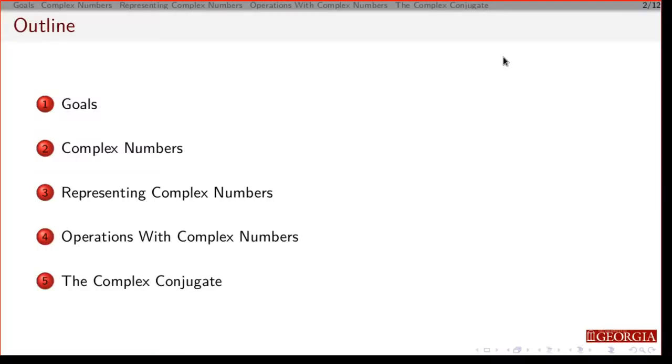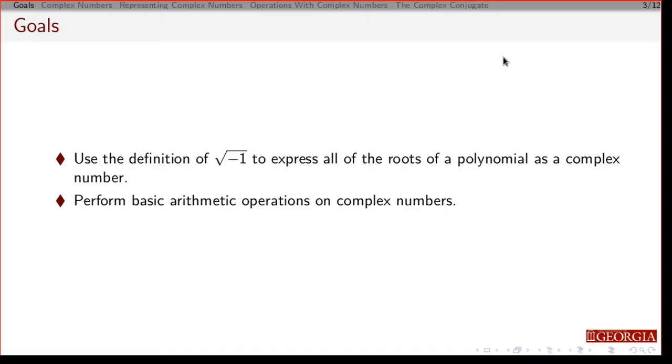So I'll go over the goals: define complex numbers, talk about different ways to represent a complex number, then go over operations. These are the basic arithmetic and algebraic operations, and we're going to define something called the complex conjugate. By the end of this, you should be able to use the square root of negative 1 to work with complex numbers, to express them in different ways, and do the basic operations. You should be able to do some basic algebra on complex numbers.